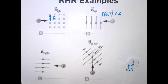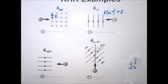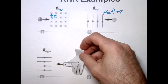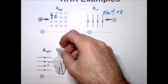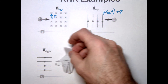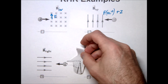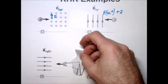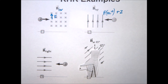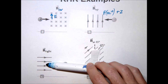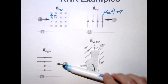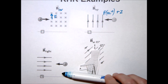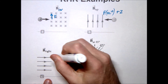Example C: a positive charge is moving to the left while the B field is pointing to the right. The key idea is that the velocity and B field must be perpendicular for a force to exist. In this case, there is no perpendicular component — they are parallel — so there is actually no force on the charge.